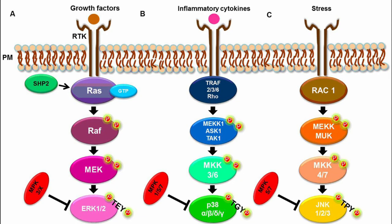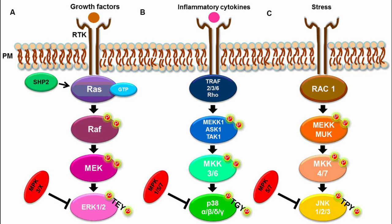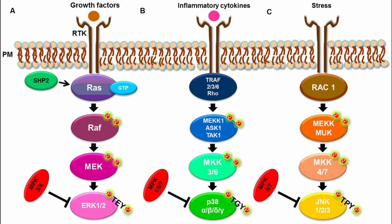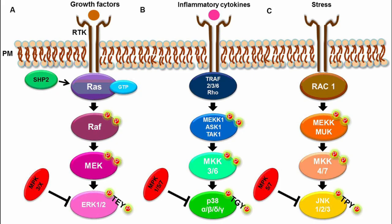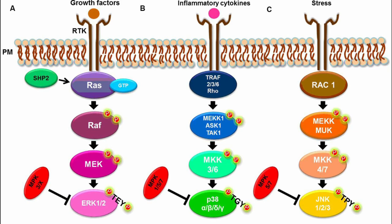The MAPK pathway is activated in response to extracellular signals such as growth factors, hormones and environmental stress. When a cell receives a signal it triggers a cascade of phosphorylation events involving MAPKs and other proteins, ultimately leading to a cellular response. MAPK stands for mitogen activated protein kinase, which is a type of protein kinase involved in signal transduction pathways.